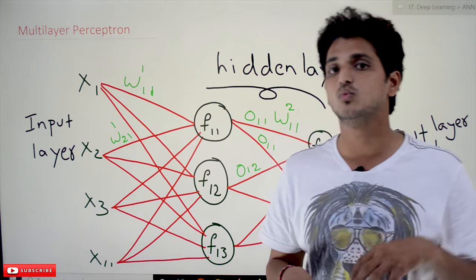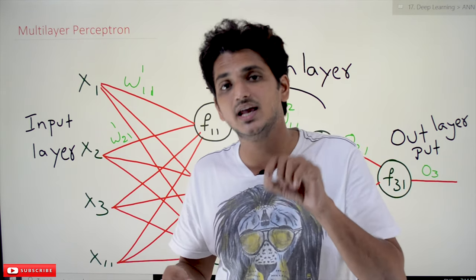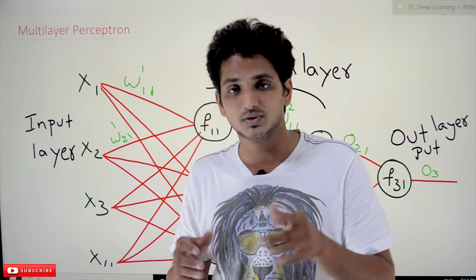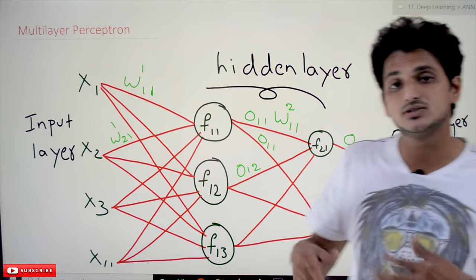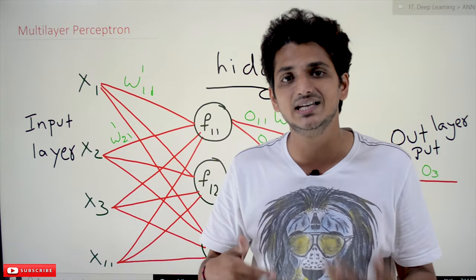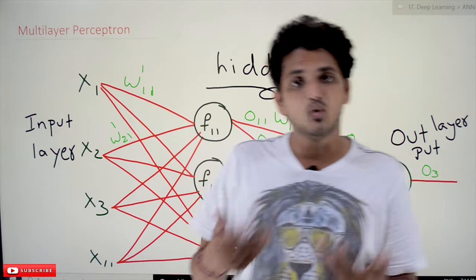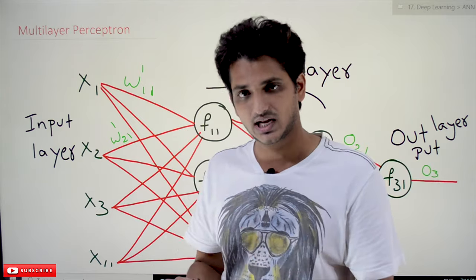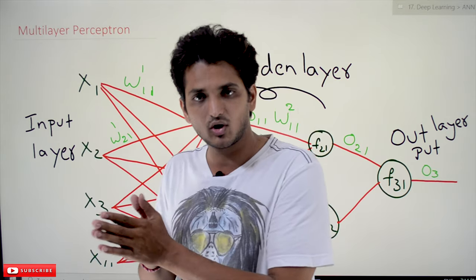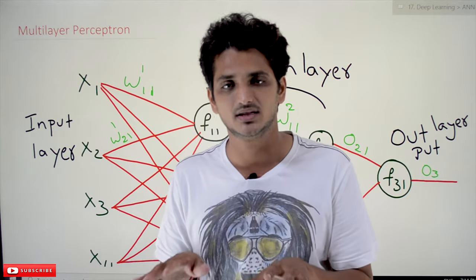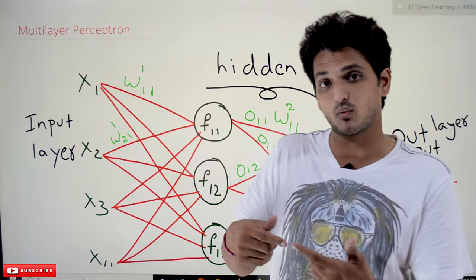This is how multi-layer perceptron works. Because of the activation function, it provides non-linearity in the network. When we have multiple layers, each activation function adds non-linearity. That is why neural networks can identify complex datasets very easily — that is the key advantage of neural networks. In our next class we will discuss how to train a multi-layer perceptron, then cover some activation functions, and in a separate video we will explain why activation functions provide non-linearity, which will give you a clear understanding of why neural networks are so efficient.